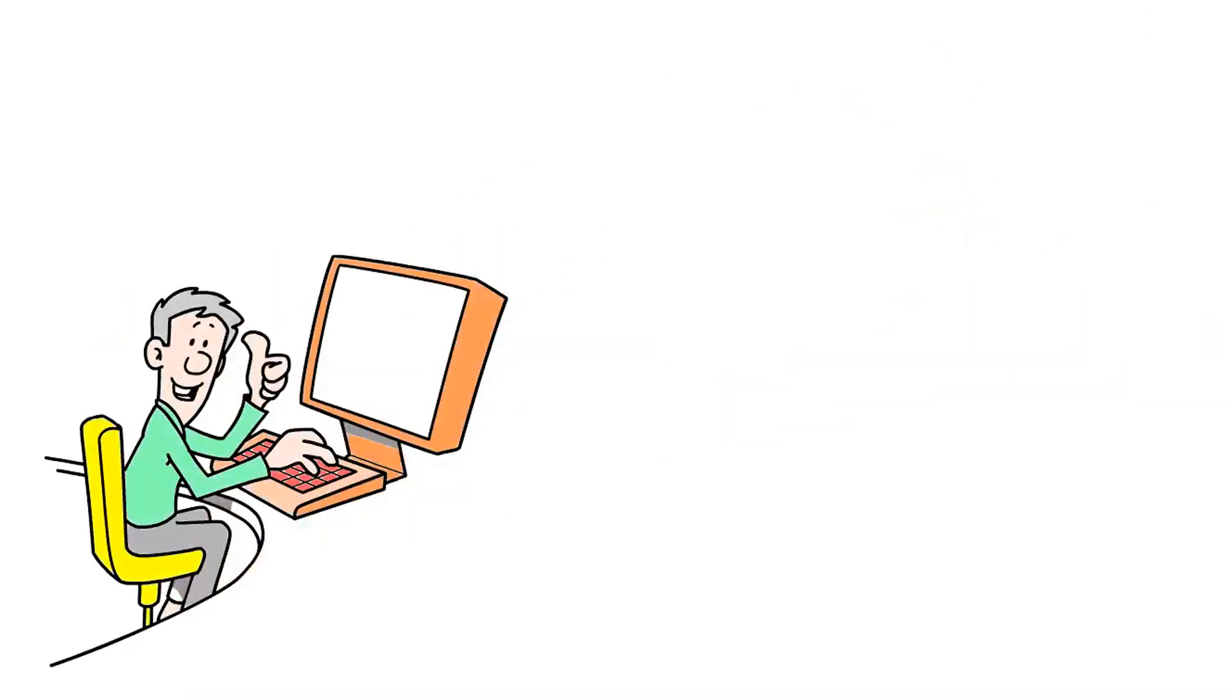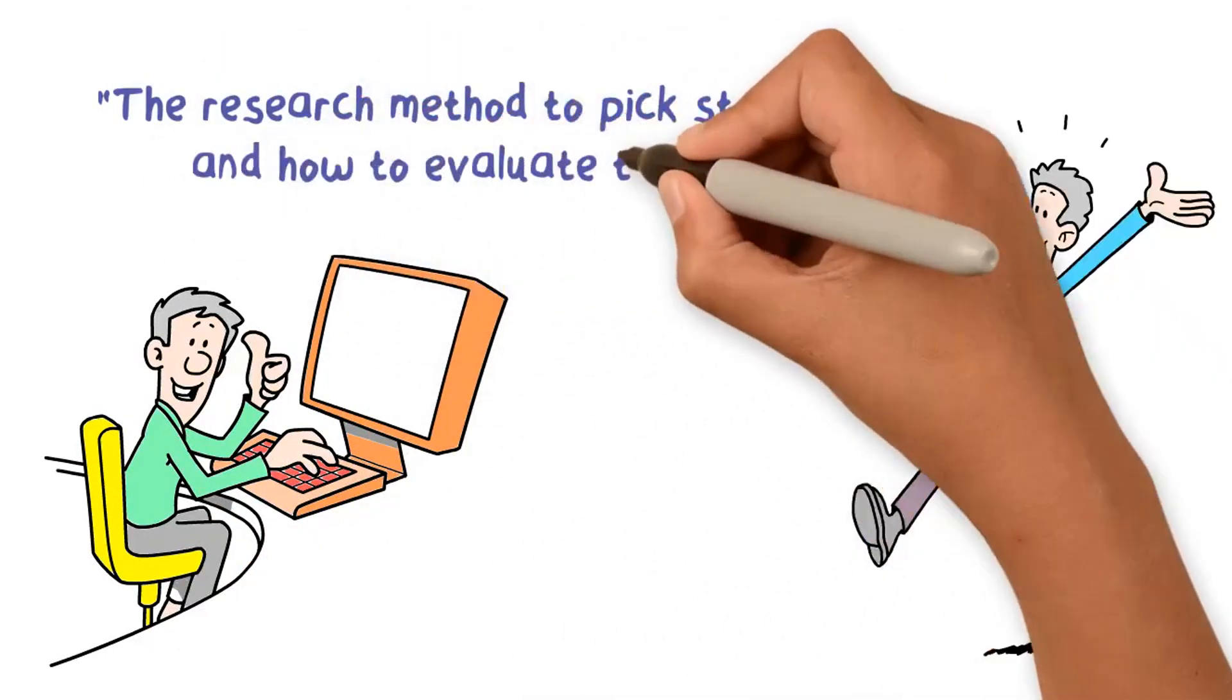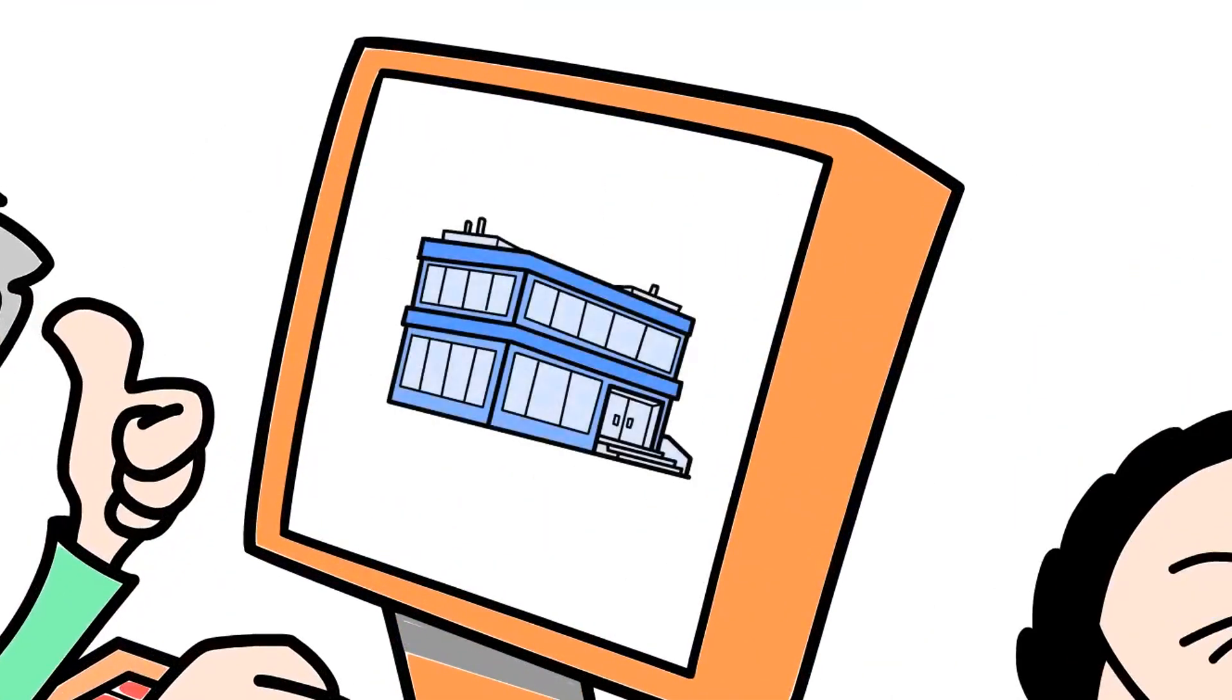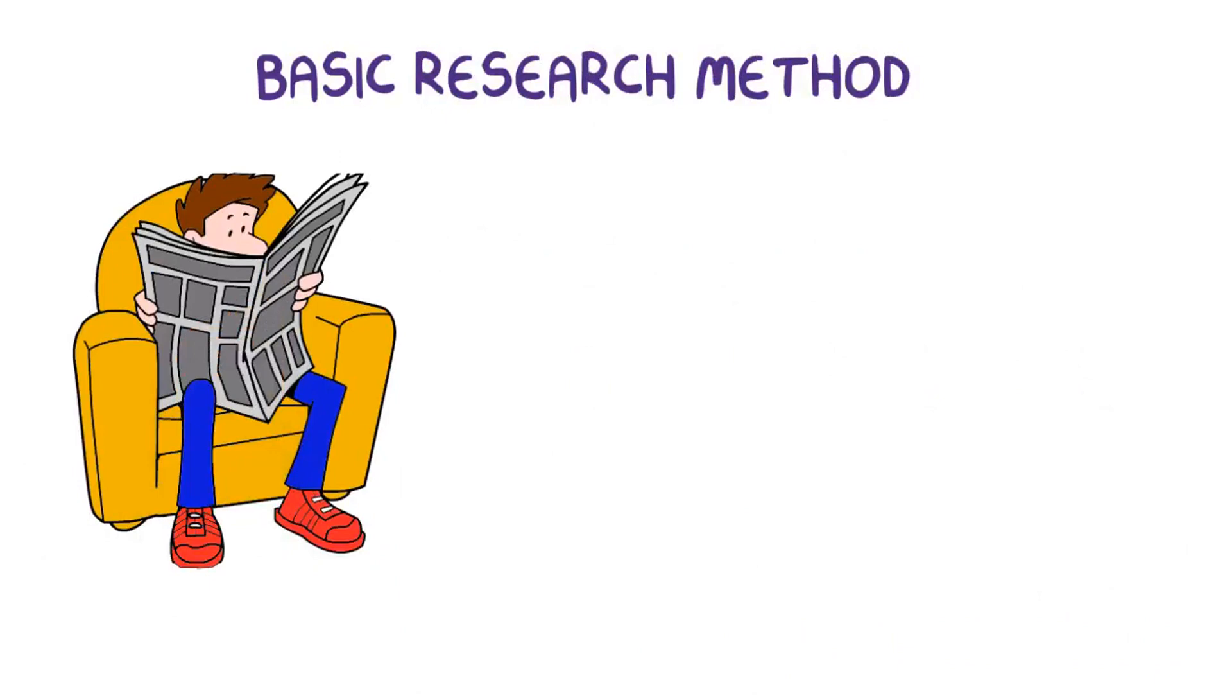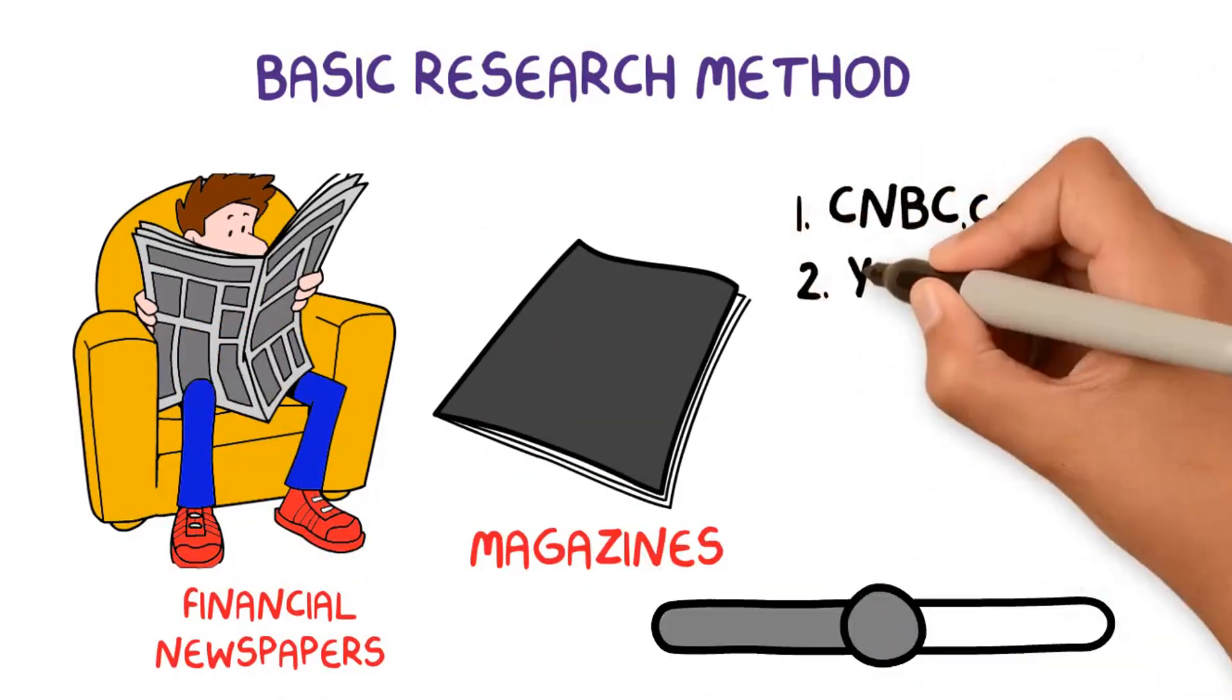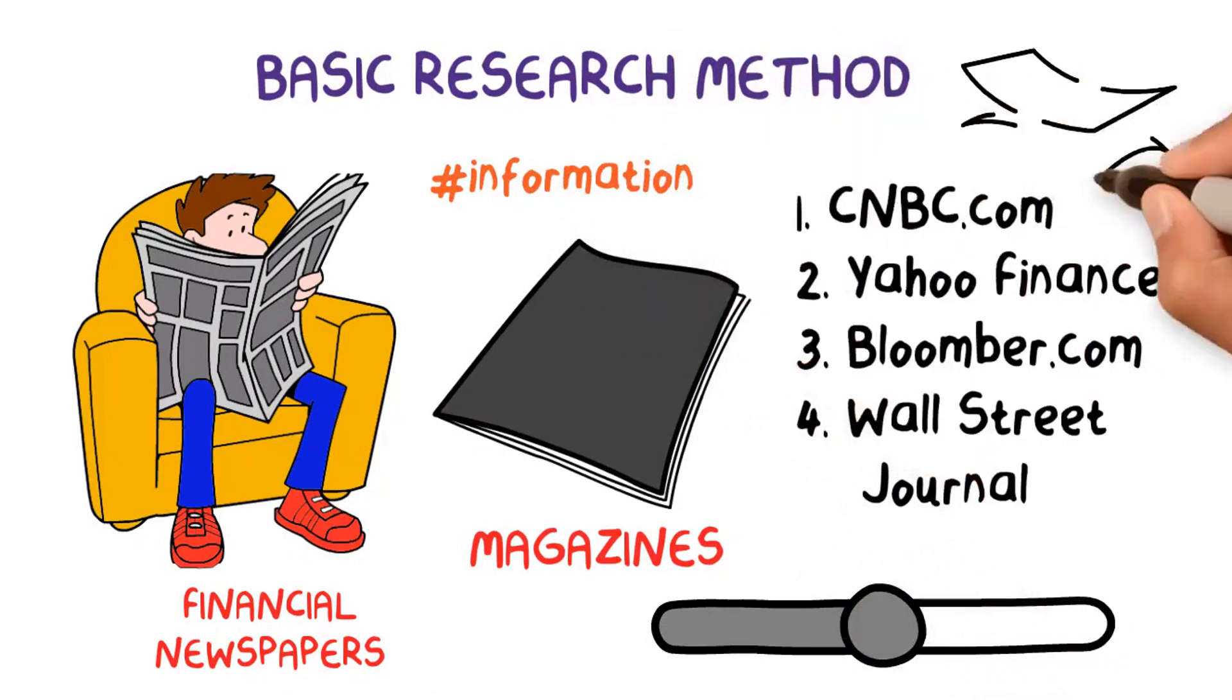Okay, now we've come to the core part of investment, and it's where you can determine your success in your investment career, and it is the research method to pick stocks and how to evaluate them. The first one is the basic research method to pick stocks. This method is based on reading different financial newspapers, magazines, and websites such as CNBC.com, Yahoo Finance, Bloomberg.com, or Wall Street Journal. They can help you find out valuable information about potential companies you might decide to invest in.